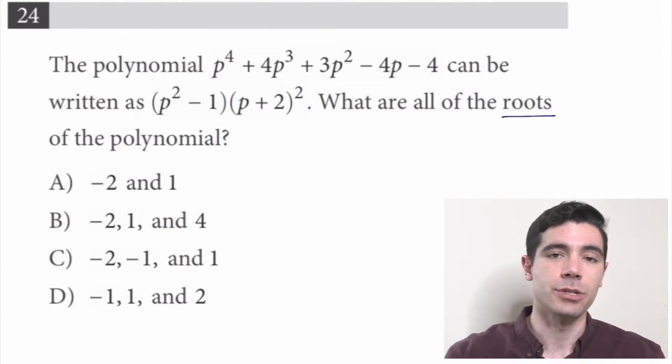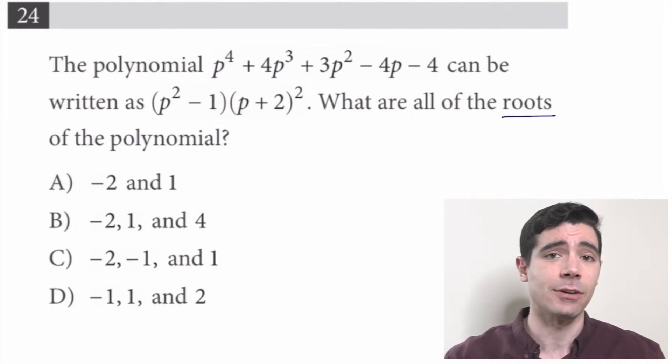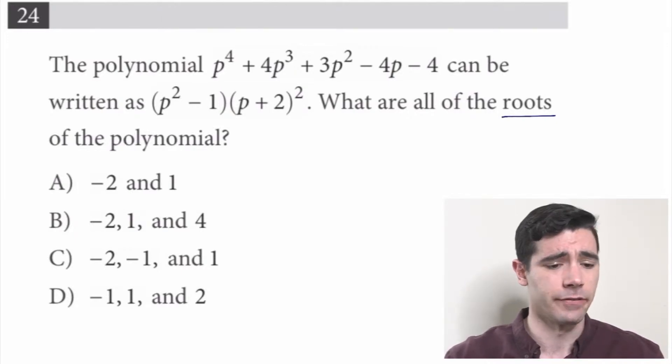Well, what is a root of a polynomial? Those would be the values that make the polynomial equal to 0, which would be pretty hard to tell from that first version of the polynomial with all those p's scattered about. But this factored form, p squared minus 1, p plus 2 quantity squared, well, from there it's pretty clear what values would make it equal to 0.